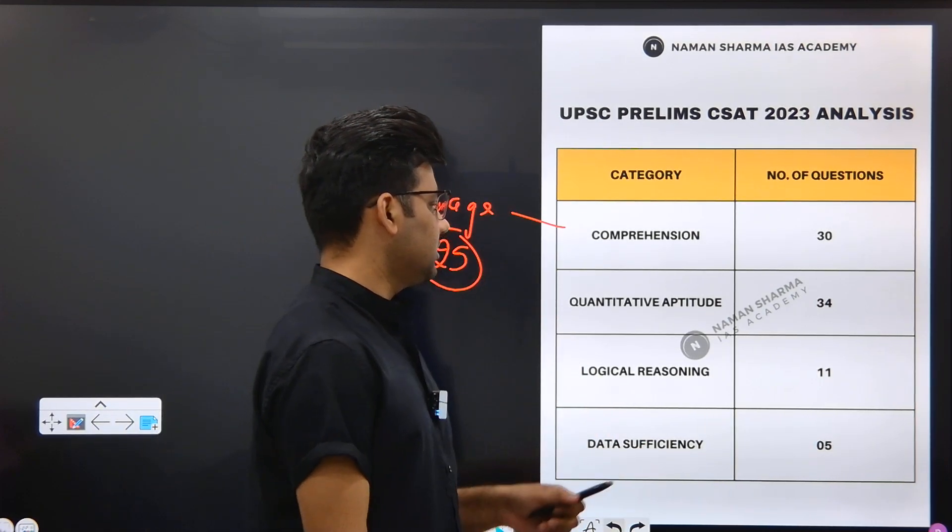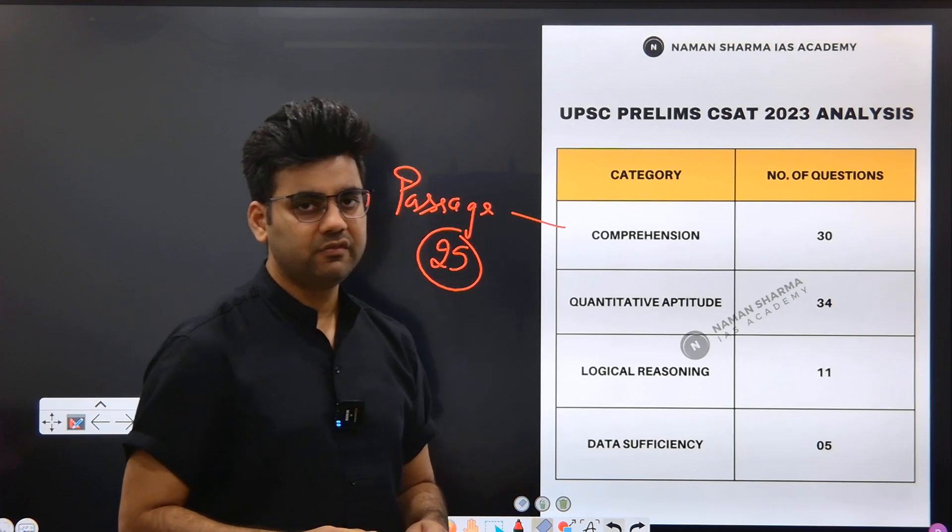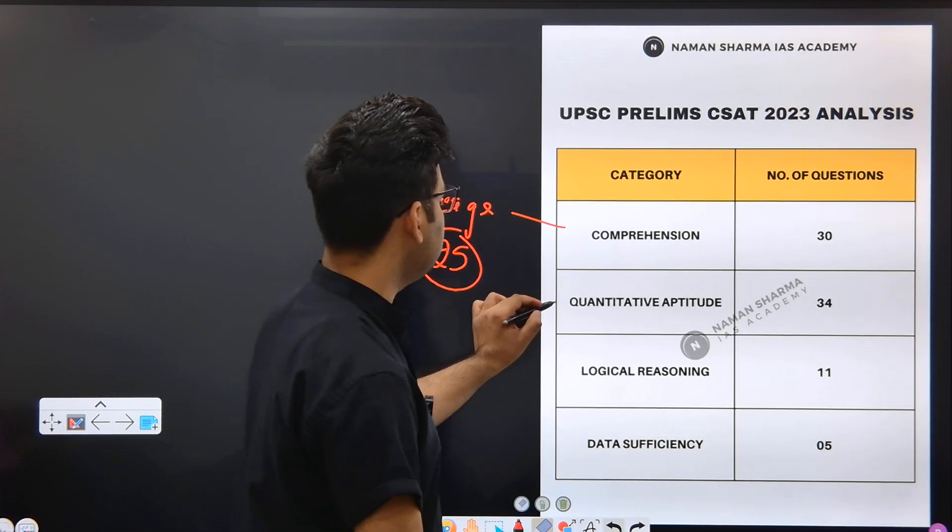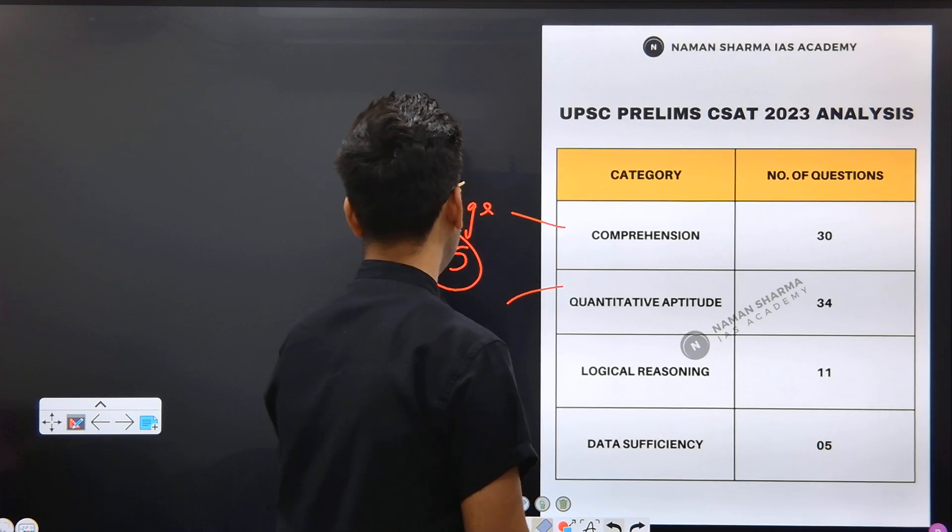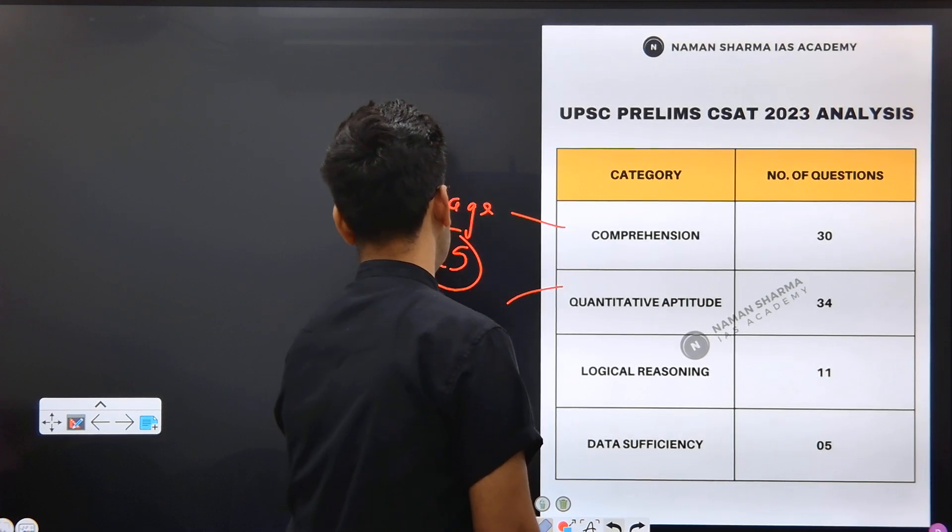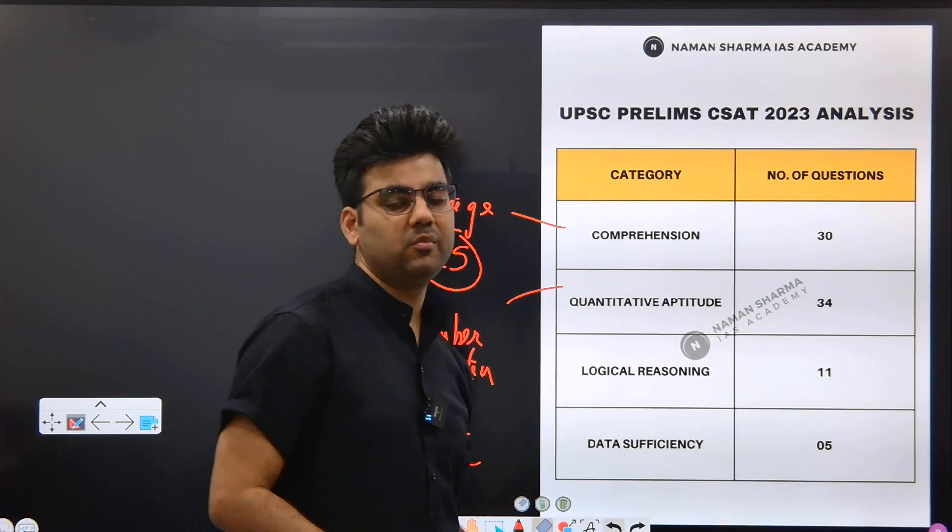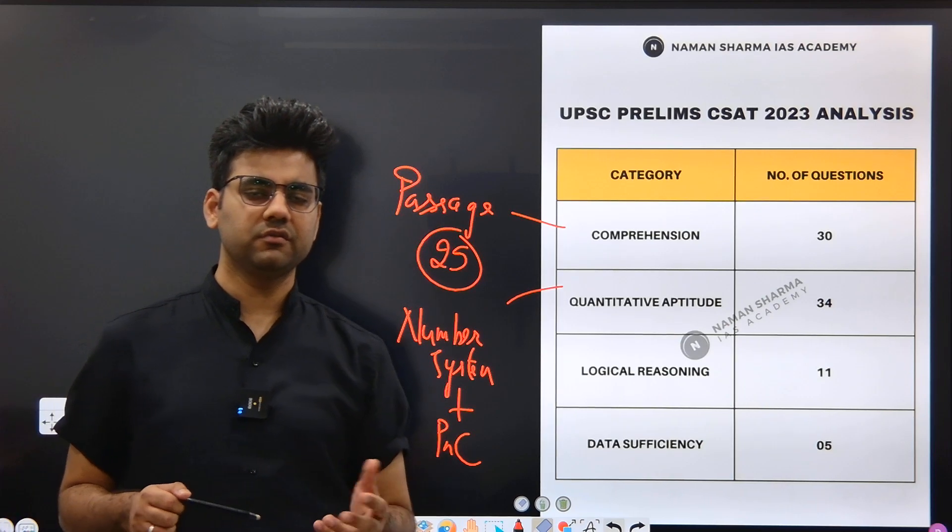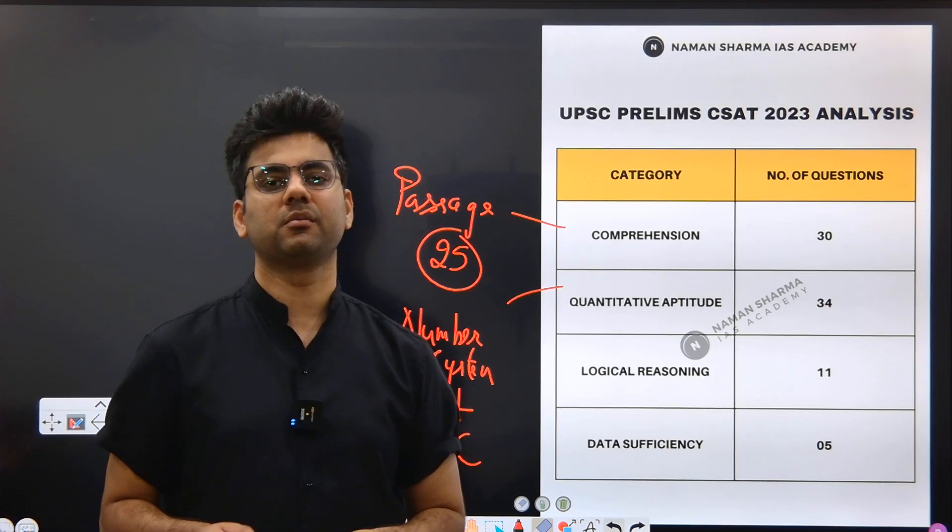Next section is about the quantitative aptitude which included 34 questions and the majority of the questions were included from the number system and PNC. PNC is permutation and combination. Also some questions were included from the probability section.